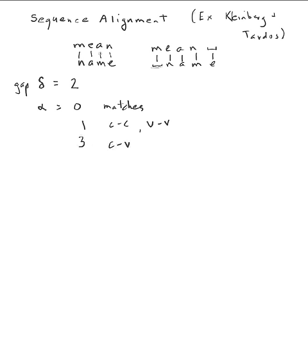In the first alignment, matching 'mean' to 'name': M-to-N costs one, E-to-A costs one, A-to-M costs three, N-to-E costs three — total cost of eight. In the second alignment: M-to-gap costs two, E-to-N costs three, A-to-A costs zero, N-to-M costs one, gap costs two — also a total cost of eight. You can see there are several different possible matchings.